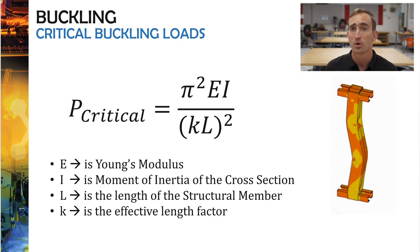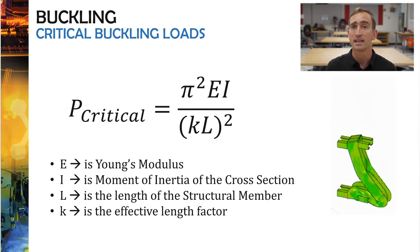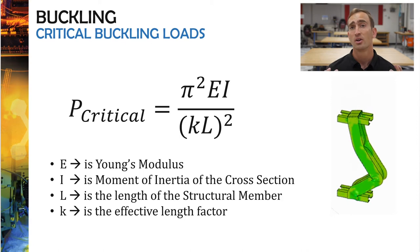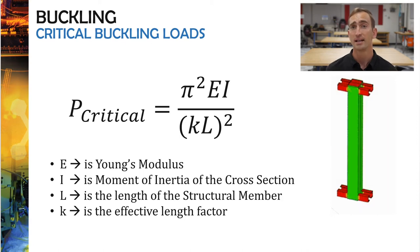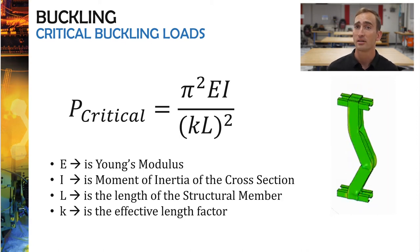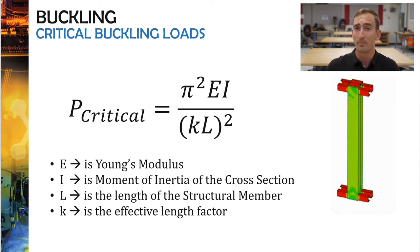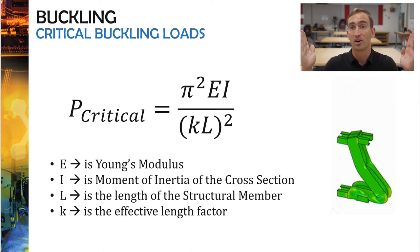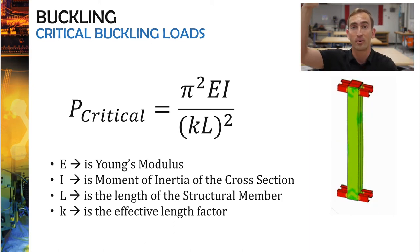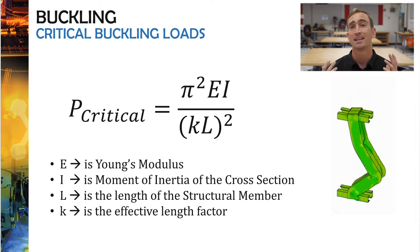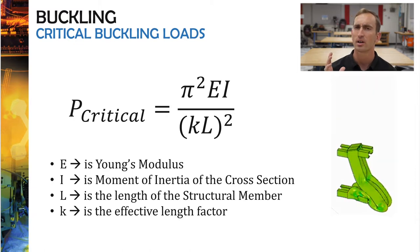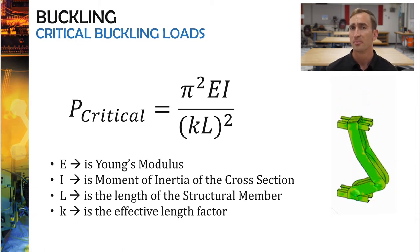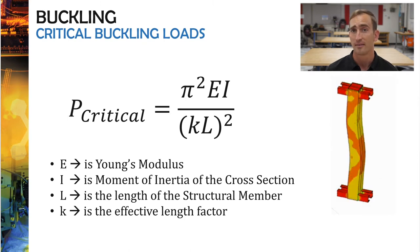If we look at this equation more closely, we can see that E is Young's modulus, which we discussed in material properties. I is the moment of inertia. L is the length of the overall member — its height or width, depending on how it's being compressed, vertically or horizontally. And K is the effective length factor, which we're going to talk about in a little bit more detail in a moment.